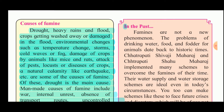The causes of famine include drought, heavy rains and floods, crops getting washed away or damaged, environmental changes such as temperature change, storms, cold waves or fog, damage of crops by animals like mice and rats, attack of pests like locusts, diseases of crops, and natural calamities like earthquakes. Of these, drought is the main cause.